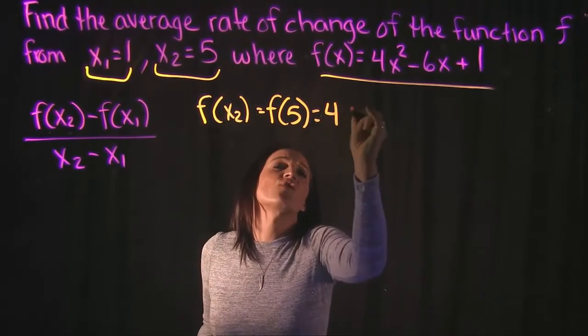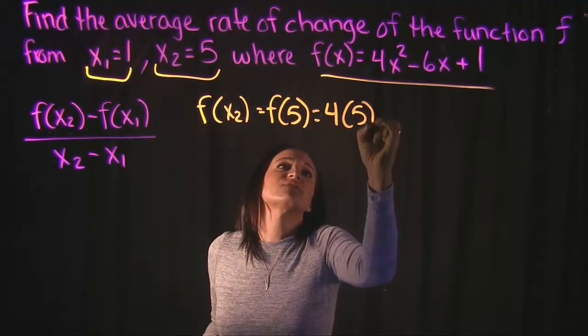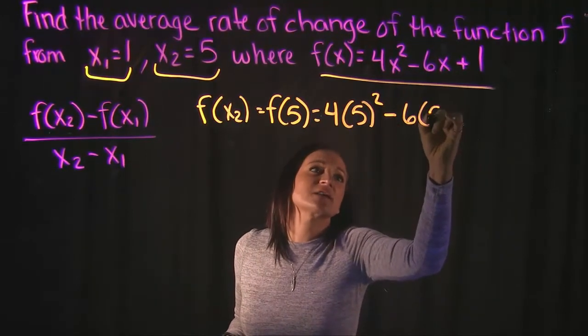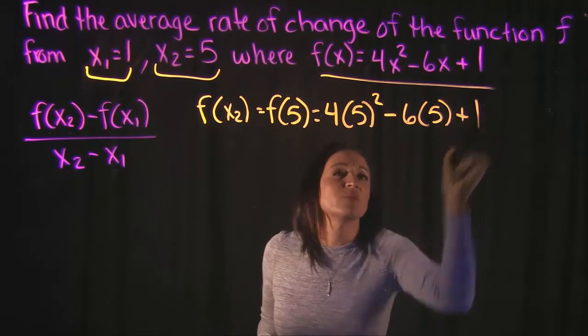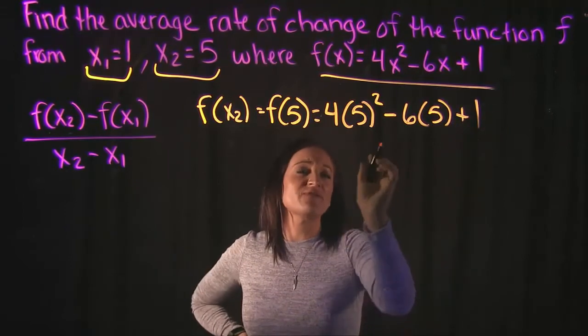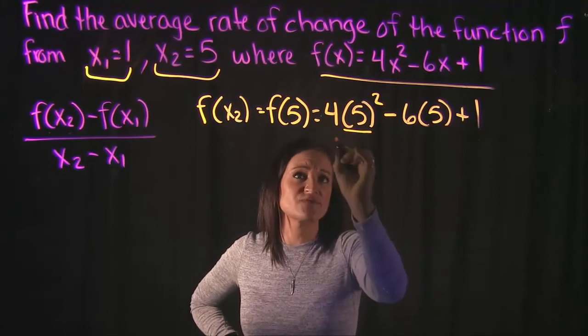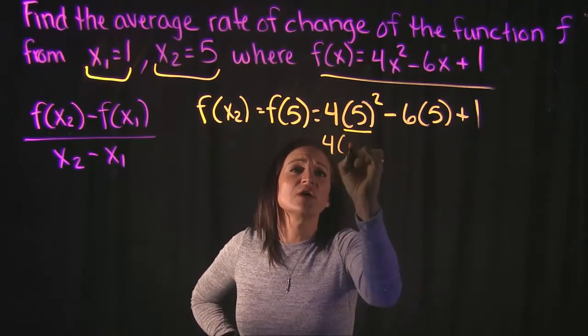So that's going to look like 4x squared, where x is 5. So 4, 5 squared minus 6 times x, which again is going to be a 5 plus 1. So simplifying here, we need to do 5 squared. 5 squared is 5 times 5, which is 25.